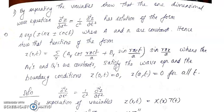Hello all. In today's class we will see a few more problems on the method of separation of variables. The first question is: by separating the variables, show that the one-dimensional wave equation ∂²z/∂x² = (1/c²)(∂²z/∂t²) has a solution of the form A·e^(±inx ± inct), where A and n are constants. Hence show that the function z(x,t) = Σ [Aᵣcos(πrct/a) + Bᵣsin(πrct/a)]·sin(rπx/a) satisfies the wave equation and the boundary conditions z(0,t) = 0 and z(a,t) = 0 for all t.